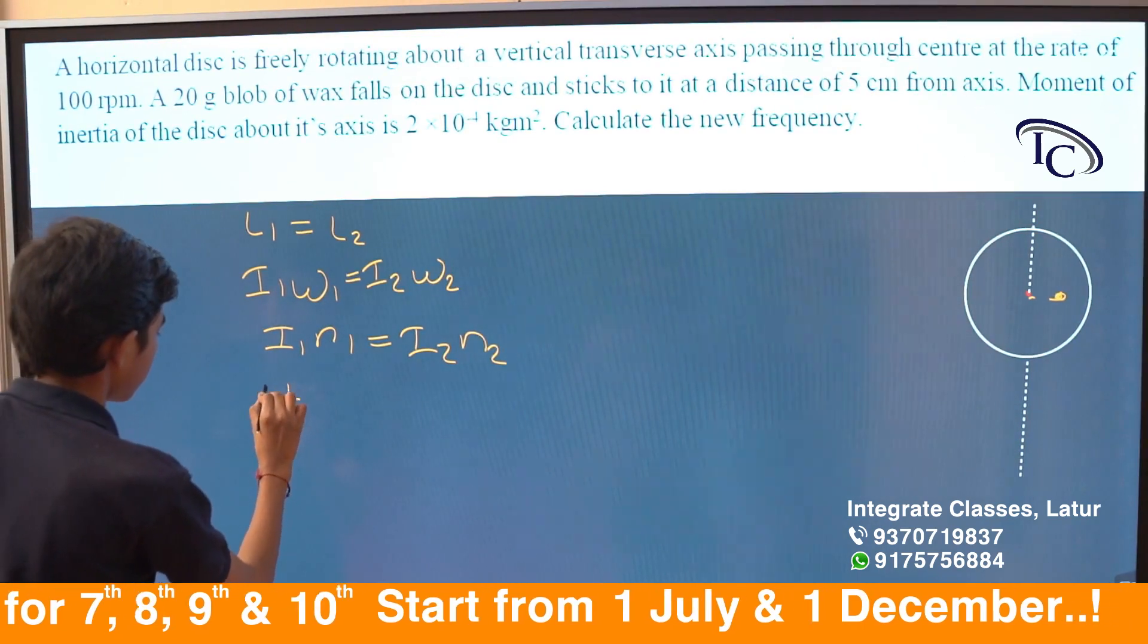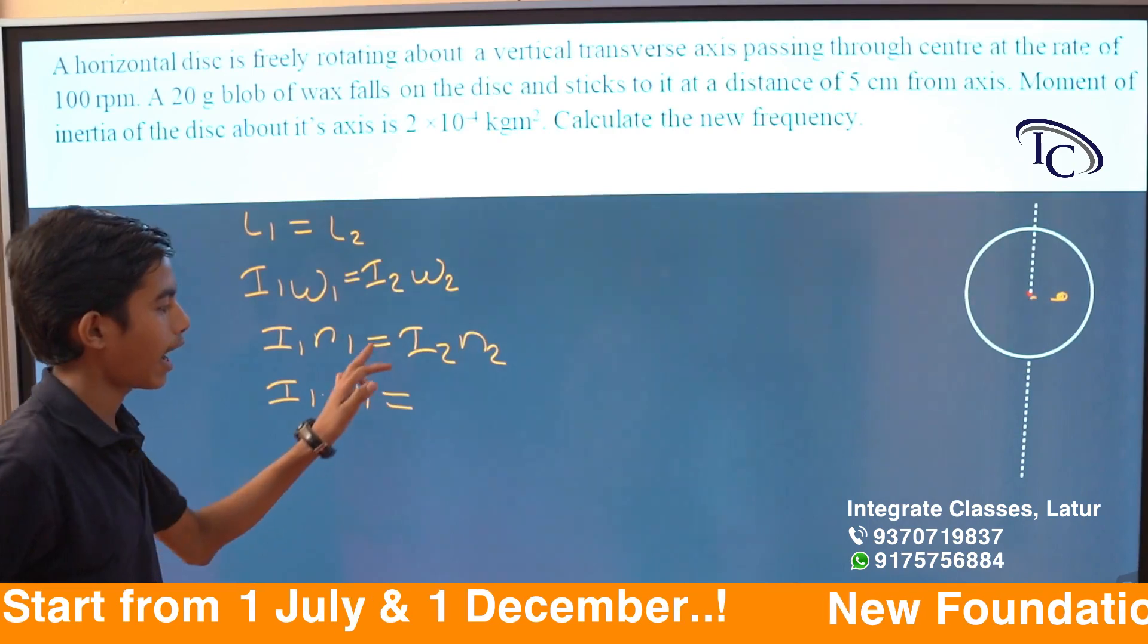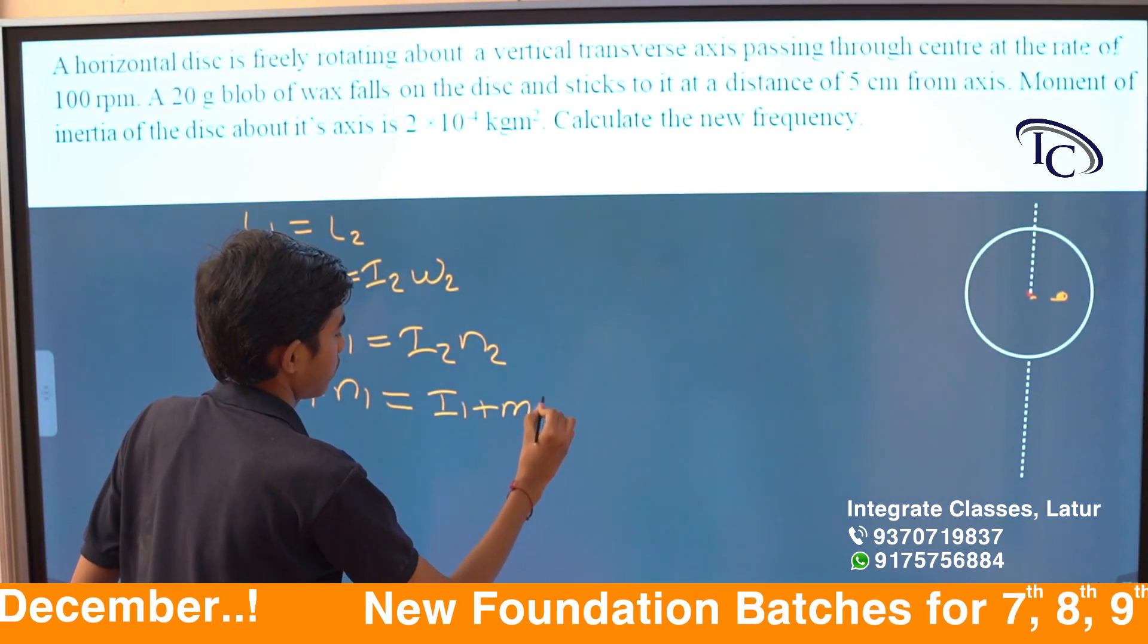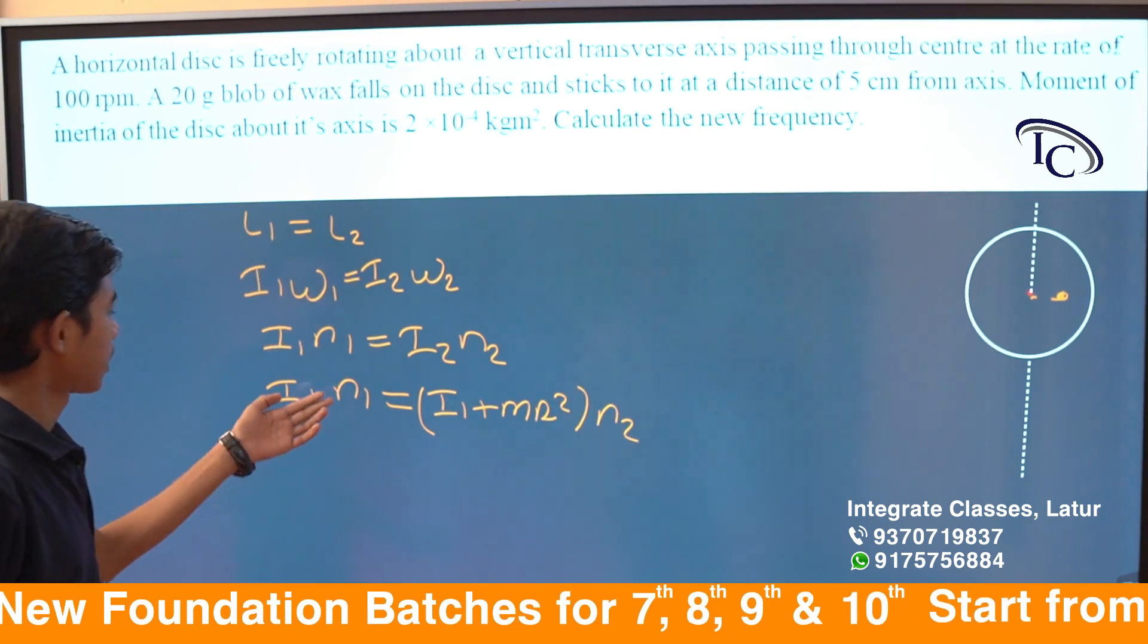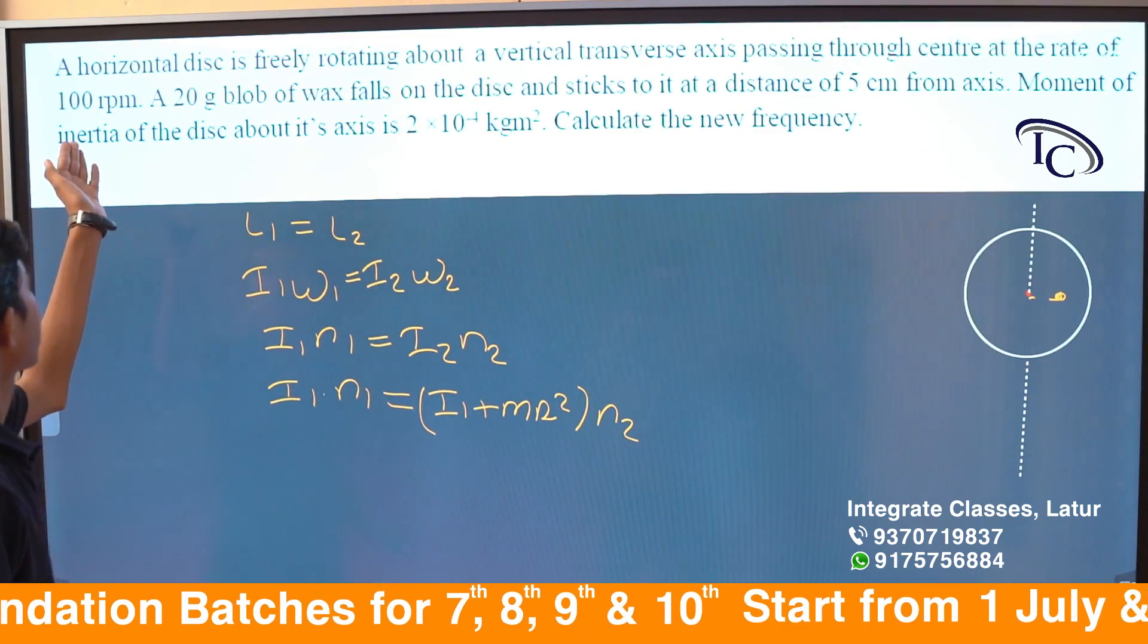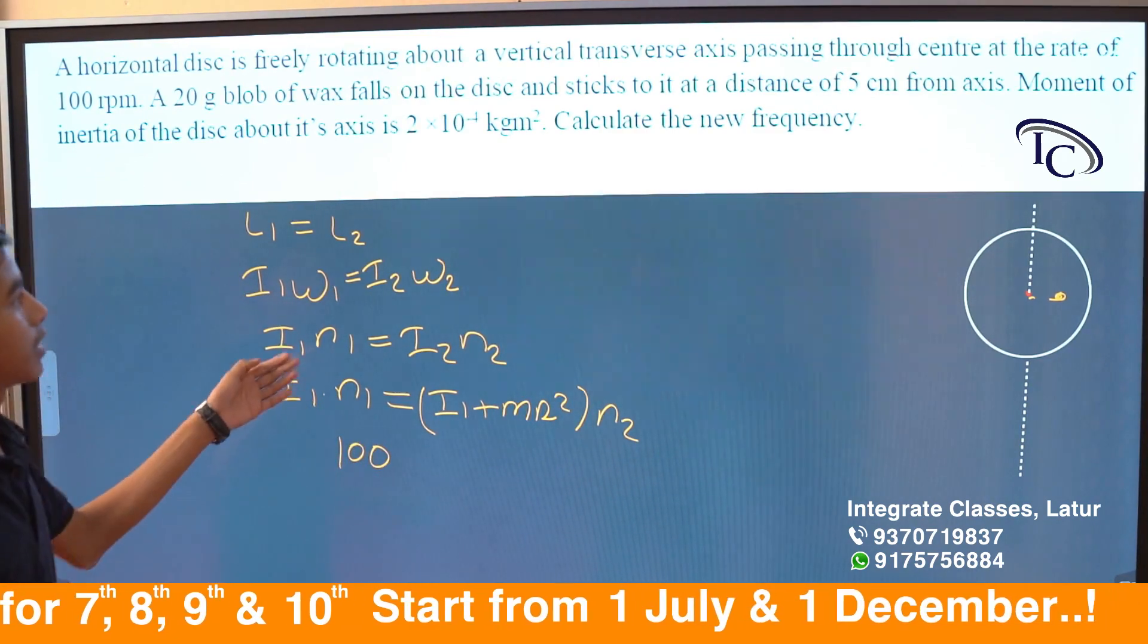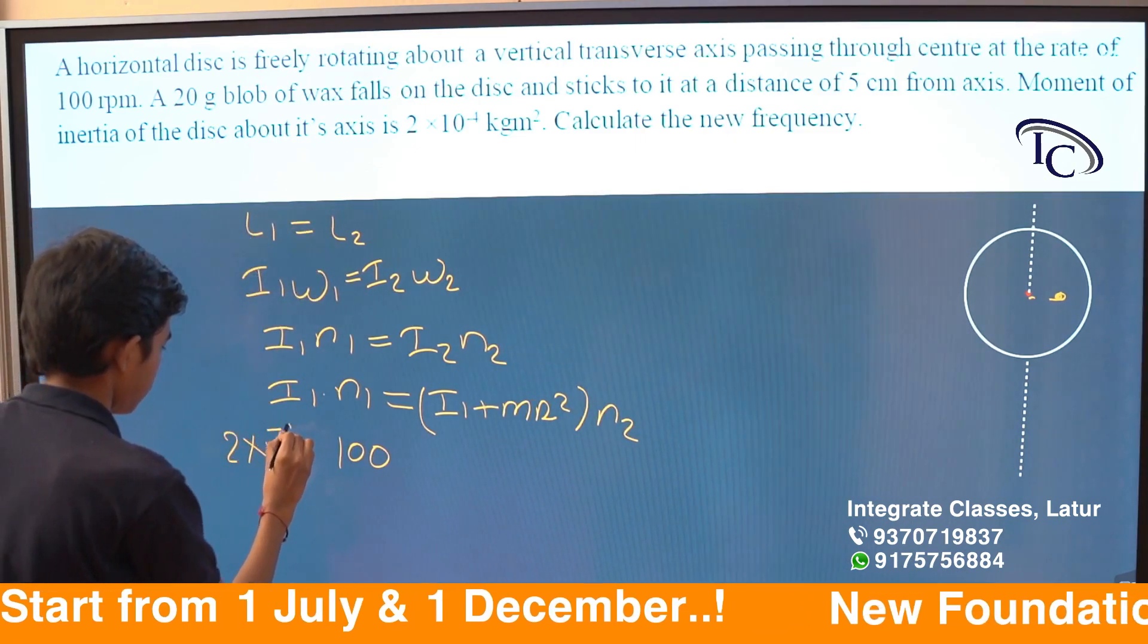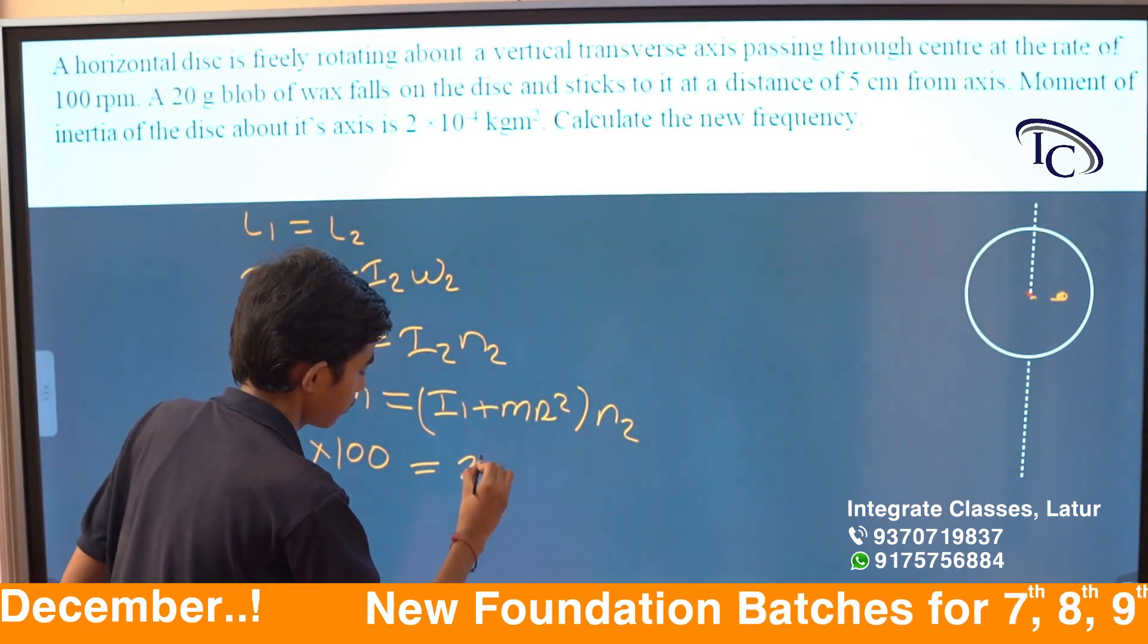I1n1 equals I2n2. n1 = 100 rpm. Moment of inertia I1: 2×10^-4 equals 1×10^-4.